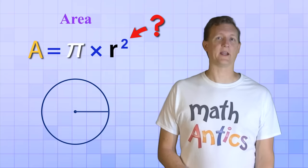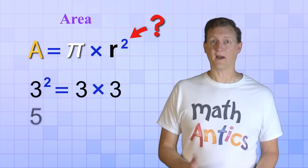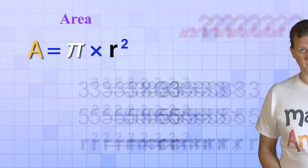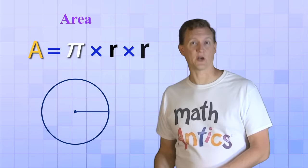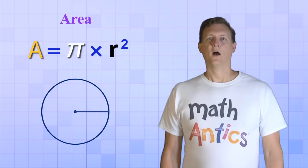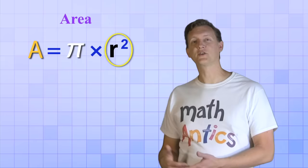Okay, but what does it mean to square the radius? Well, squaring a number just means multiplying it by itself. For example, 3 squared just means 3 times 3, and 5 squared just means 5 times 5, and r squared just means r times r. So our formula is really just area equals Pi times r times r. But we write it in the r squared form because it's more compact.